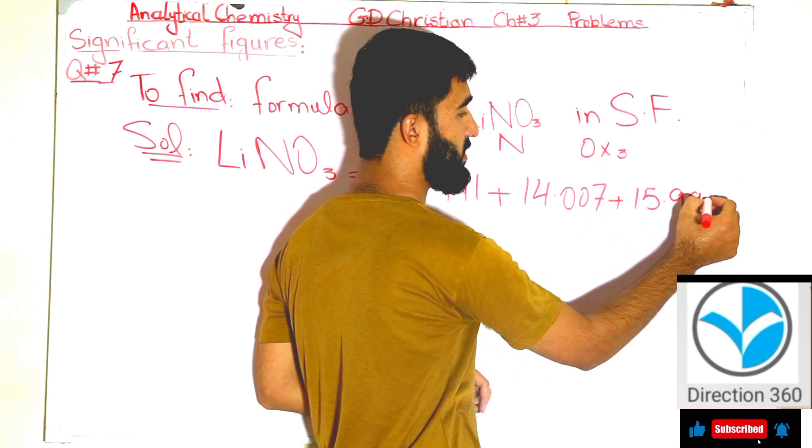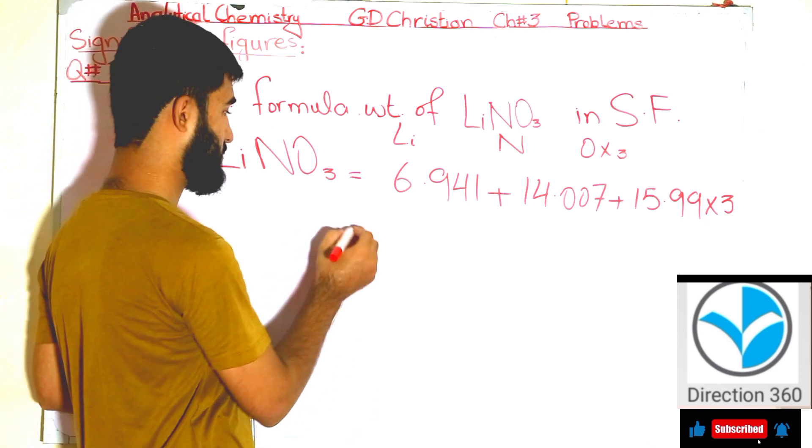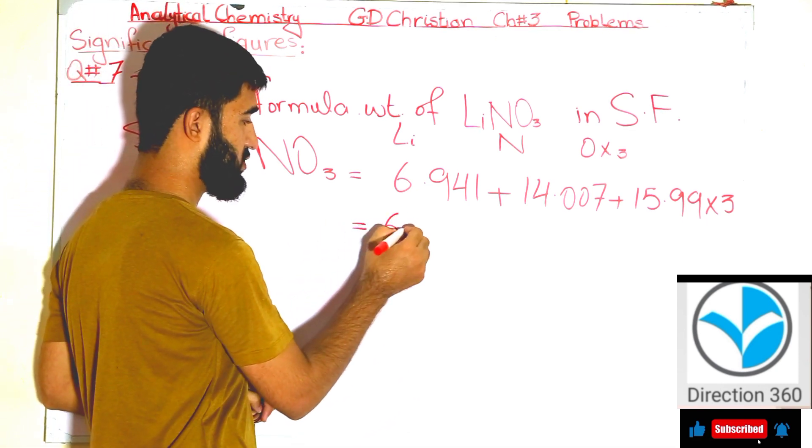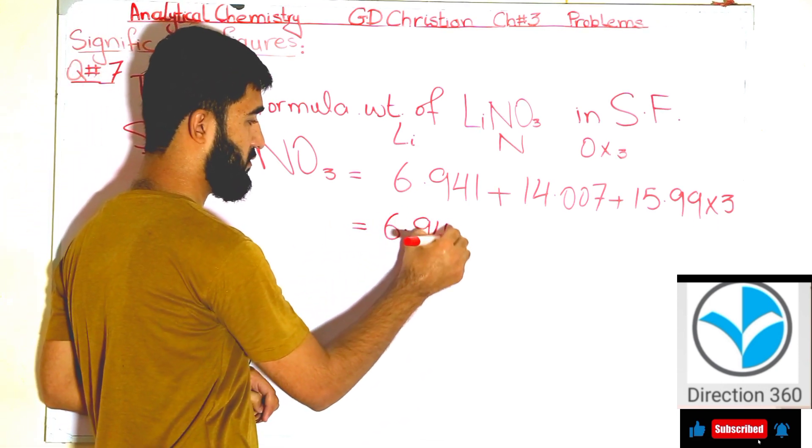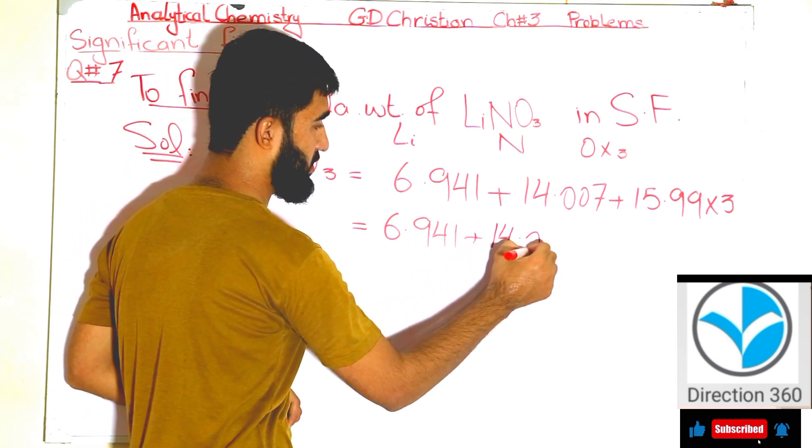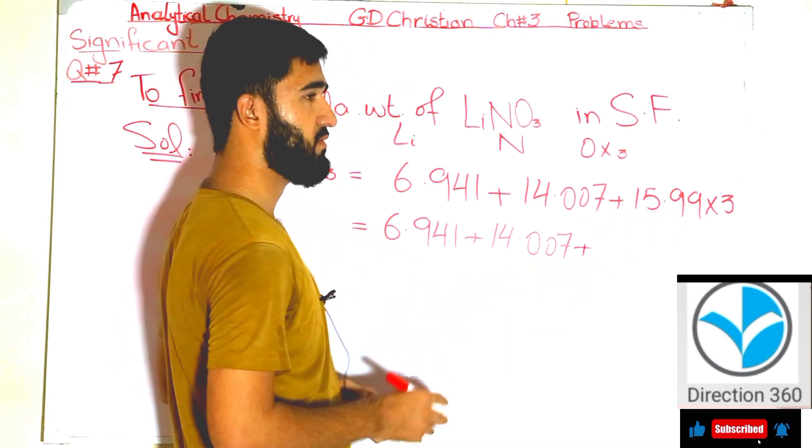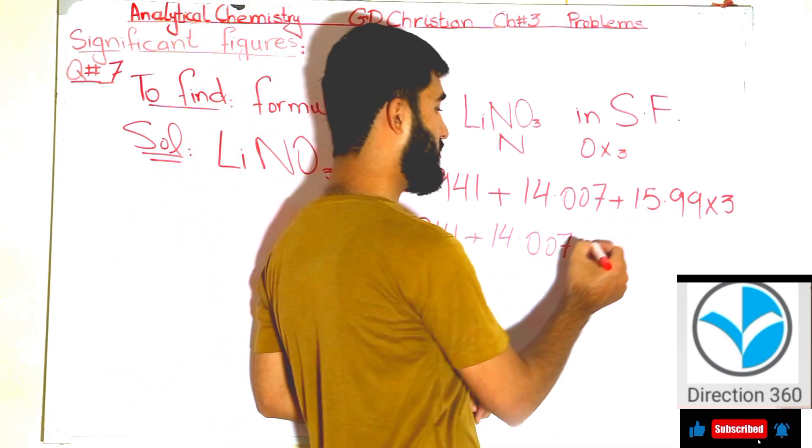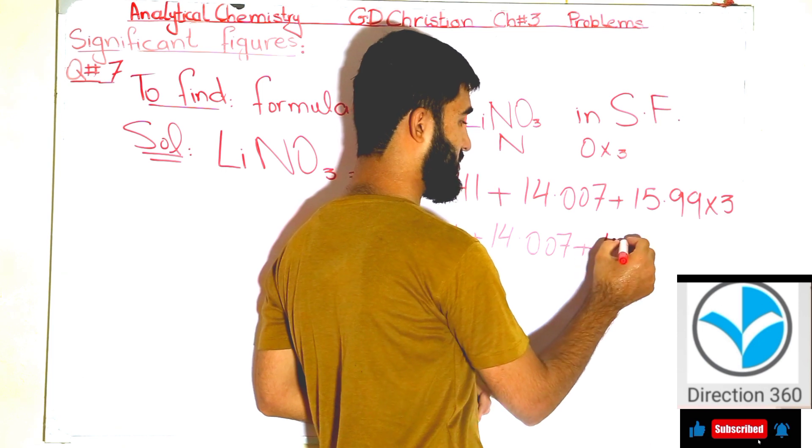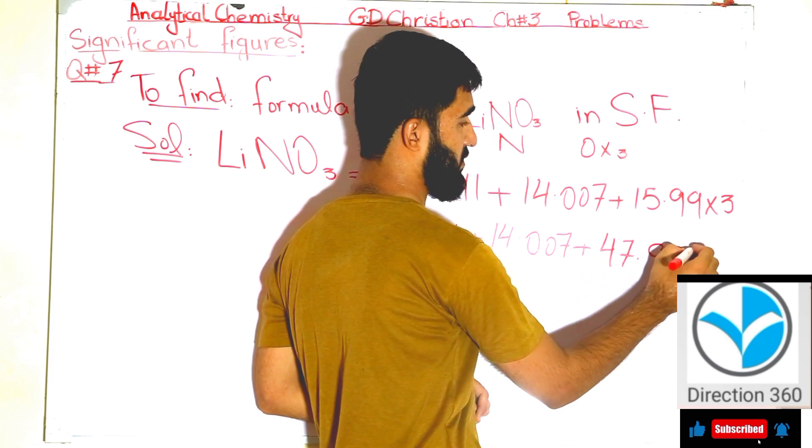Now solving: 6.941 plus 14.007 plus 15.99 times 3. First, calculating the oxygen component: 15.99 times 3 equals 47.997.